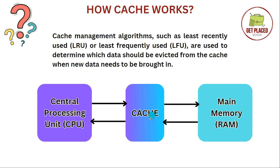Whenever a new file comes into the cache, we need to determine which files should be kept in cache and which should be removed. To manage this, we have cache management algorithms — for example, Least Recently Used, that is LRU, and Least Frequently Used, that is LFU. Based on these algorithms, the system determines which data should be kept in the cache and which data should be evicted whenever a new file needs to be cached.